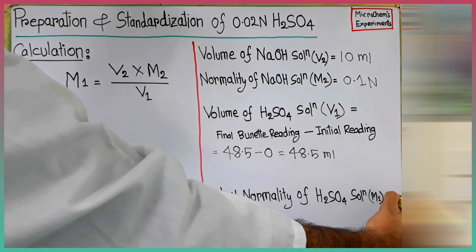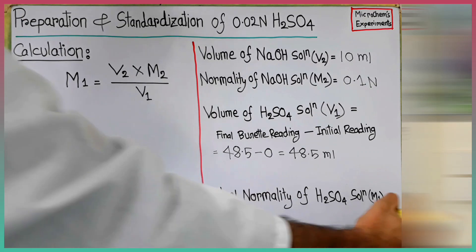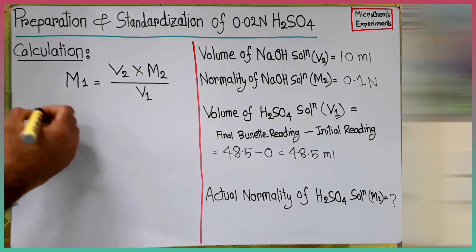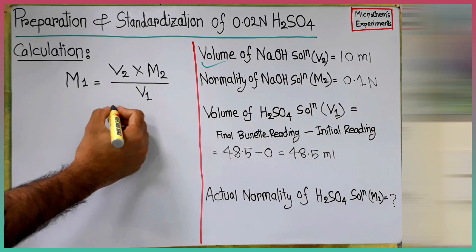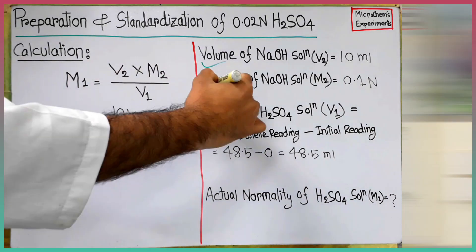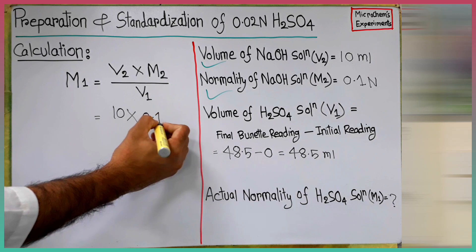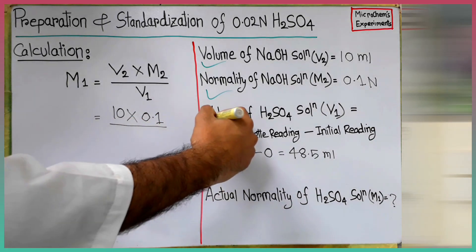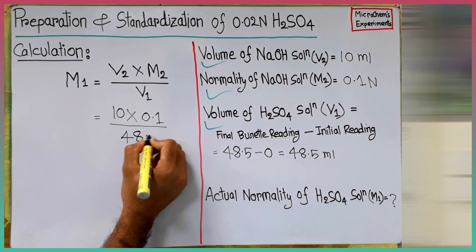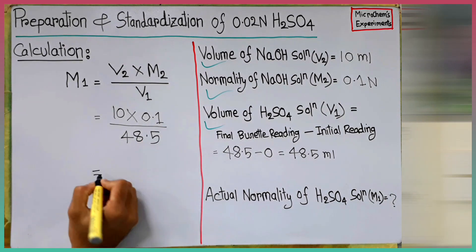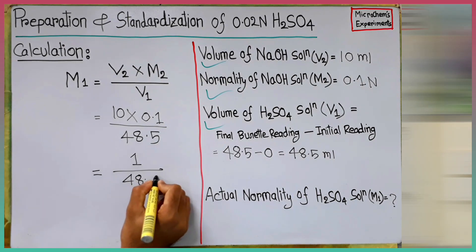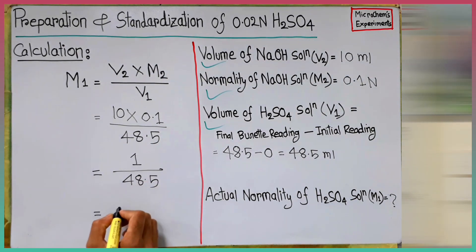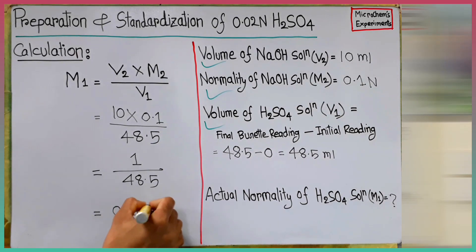Now we have to find the actual normality of the newly prepared sulfuric acid solution. Let's put the values in the equation given on the board. By solving the equation, we get the actual normality of the sulfuric acid solution is 0.0206 normal.